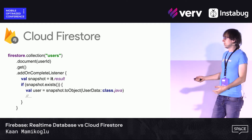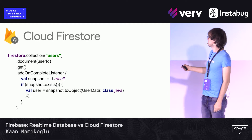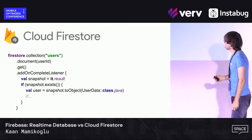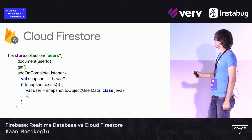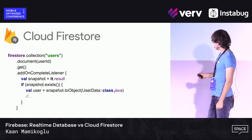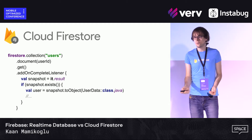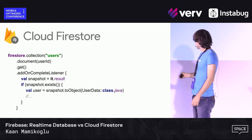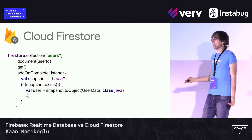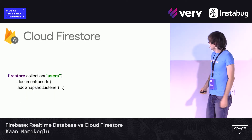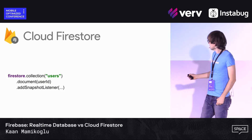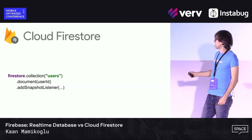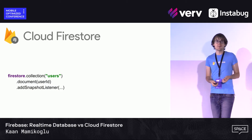To listen to changes, you use collection, then document, then call get(). Nothing happens until you add a listener. In the listener you get results, check if the snapshot exists, and use toObject() to convert the snapshot into a Kotlin object. If the snapshot doesn't exist, handle the failure and update the UI. You can get data once using get(), or add a snapshot listener to get real-time updates every time something changes.